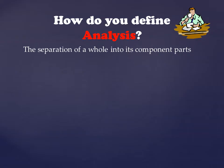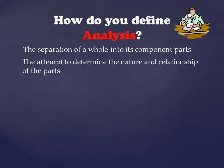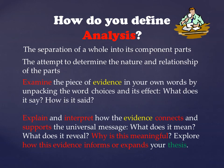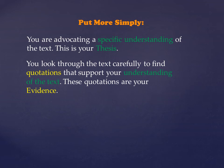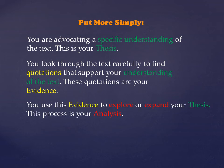What is analysis, then? Analysis is the separation of a whole into its component parts, and it's the attempt to determine the nature and relationship of those parts. You want to examine the piece of evidence you've taken, which supports your thesis, and look at how the writer has constructed that. Unpack the word choice and its effect — what is the writer trying to do? How does it explain that particular section of the book? Explain and interpret how the evidence connects and supports the universal message, which is usually the thesis of the author. What does it mean? What does it reveal? Why is it meaningful? To put it simply: you are advocating a specific understanding of the text — this is your thesis. You look through the text to find quotations that support your understanding — these are your evidence. Then you take that evidence and use it to explore or expand your thesis — this process is analysis.